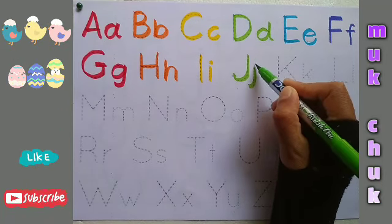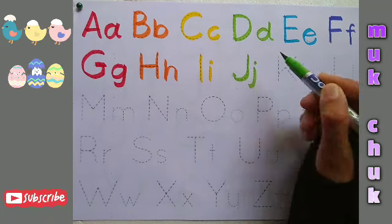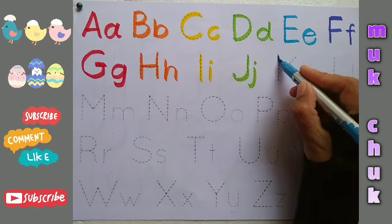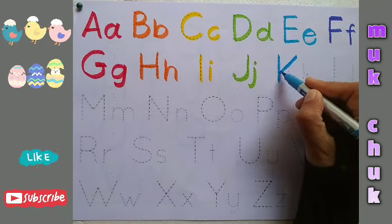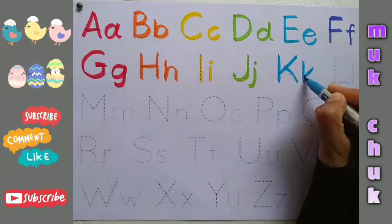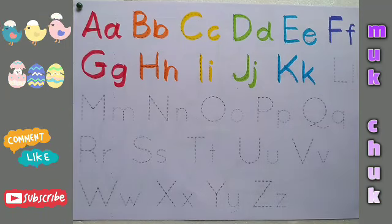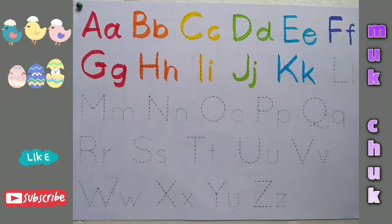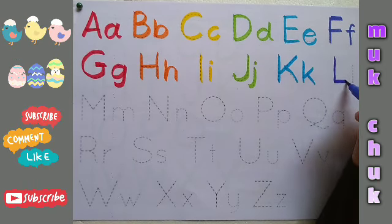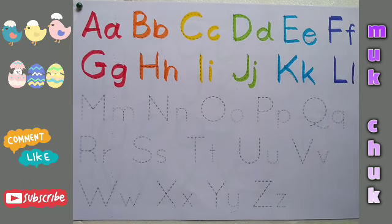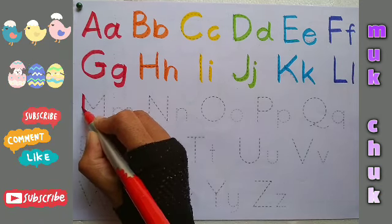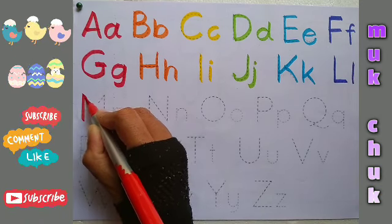J, capital J, small j. J for joker. K, capital K, small k. K for king. L, capital L, small l. L for lion.